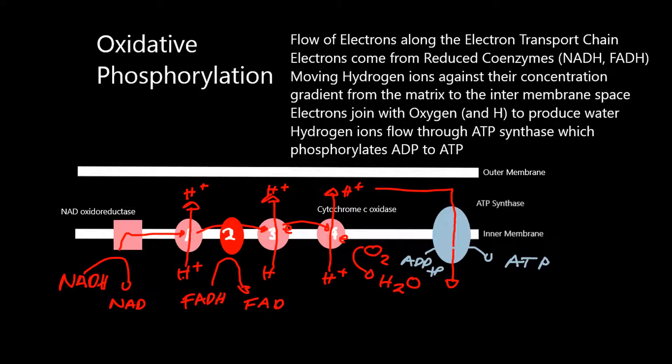When the protons flow out, one NADH could potentially generate 3 ATPs, and one FADH2 could potentially generate 2 ATPs through the efflux of protons across ATP synthase.